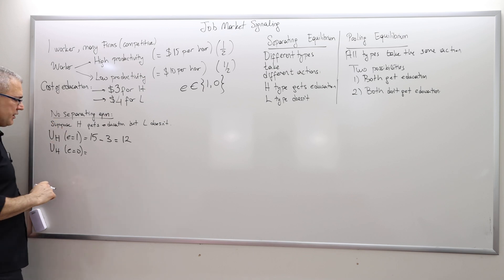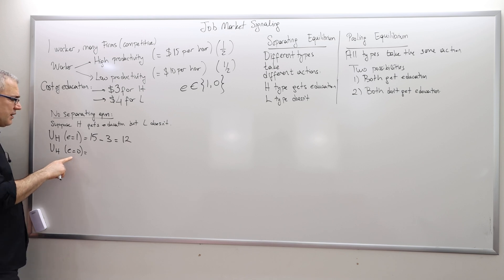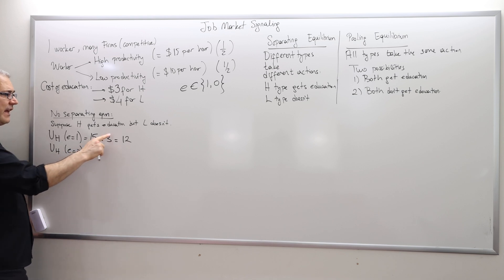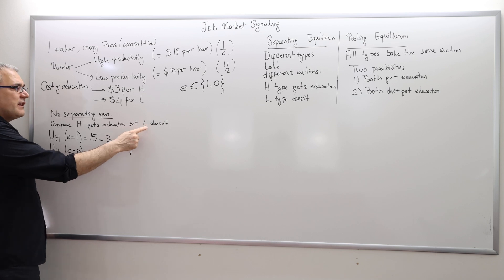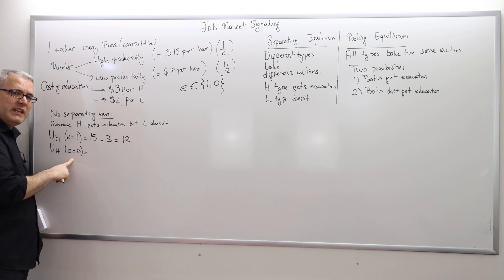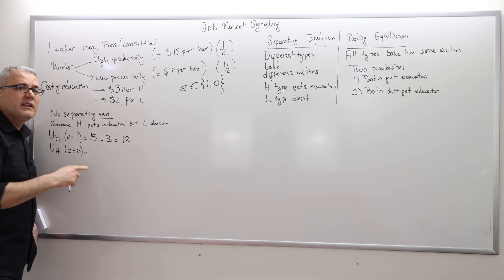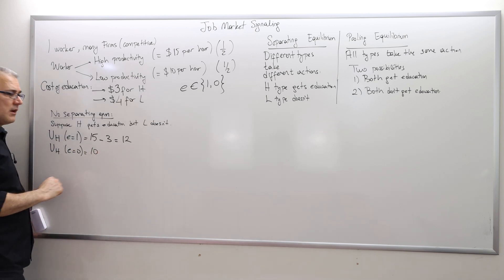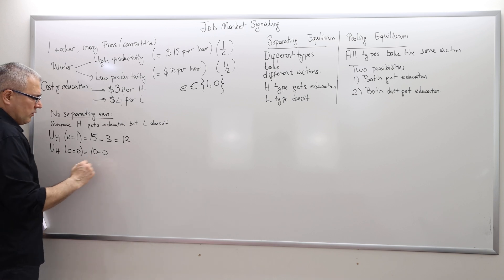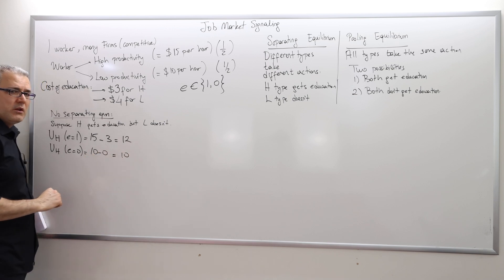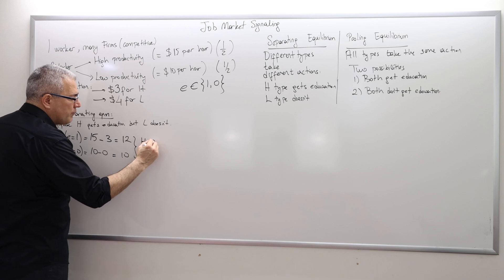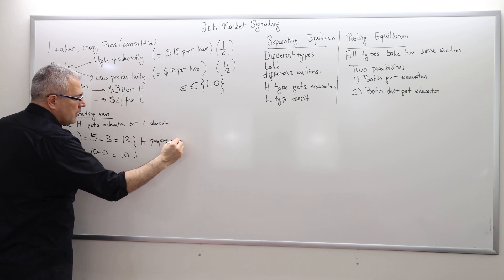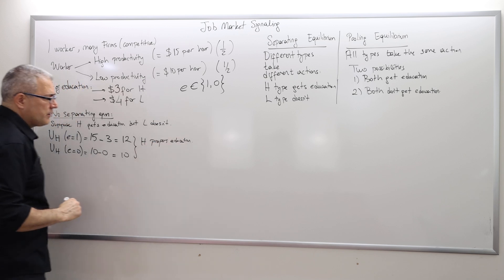What if the high type doesn't get an education? Firms observe no diploma and, following their conjecture, assume it must be the low-productivity guy — so they pay $10. They'd be wrong, but they pay $10 with zero education cost, giving a net utility of $10. So the high type prefers education at $12 over no education at $10. He's not going to regret his choice.